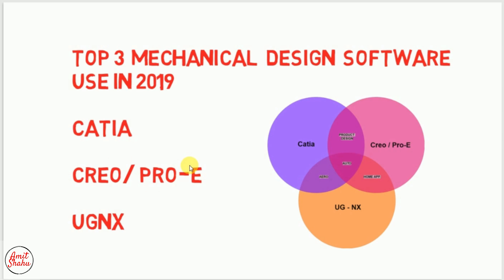The three software are CATIA, Creo, and UGNX. CATIA is most mechanical engineers' favorite software, so most students start with CATIA first. I myself also did CATIA first, but right now I work on Creo software. I've chosen these top three mechanical engineering software and we check the differences on different parameters.